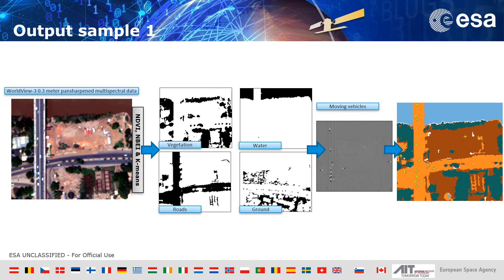This is one output from WorldView-3 images. RGB is shown on the left hand side, with analysis using all eight multispectral bands. NDVI, NBDI, and k-means provide land cover categories — vegetation, water, ground, and road coverage. In the third step, moving vehicles are identified by pairs of dark and white polygons. Finally, you can combine all of this information together to have a complete situational picture.